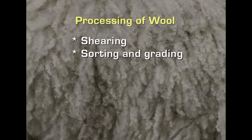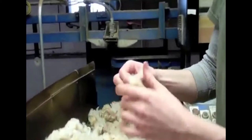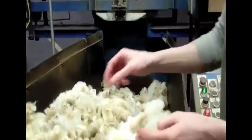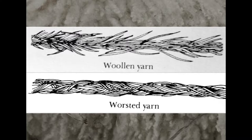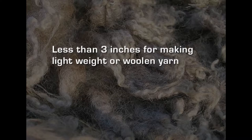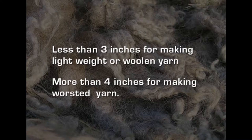After shearing, the next process is sorting and grading, where skilled workers sort on the basis of type, length, fineness, elasticity, and strength. While sorting, they also sort based on colors, which are available from beige to light shades of yellowish to brown and even black. Fibers are also sorted here based on length, because in processing wool we have two varieties: woolen yarn and worsted yarn that can be made from the same fibers. Generally, less than 3 inches goes for making lightweight woolen yarn and more than 4 inches is used for making worsted yarn.